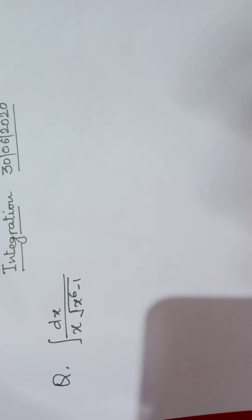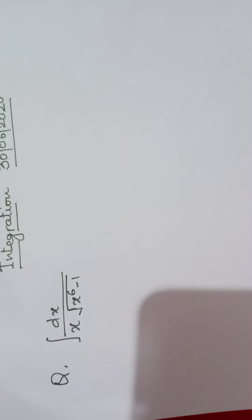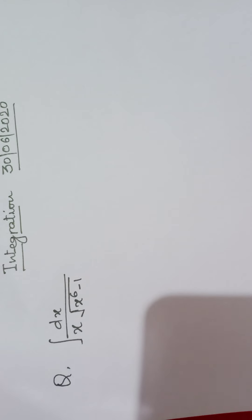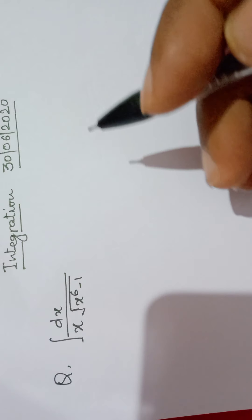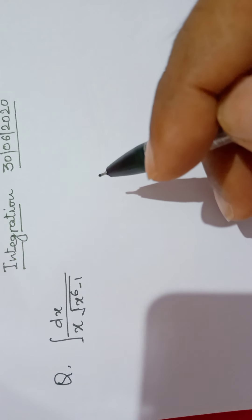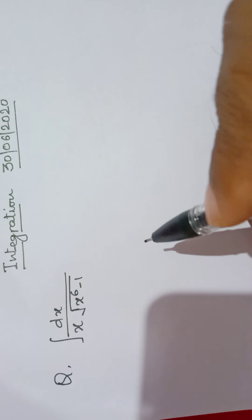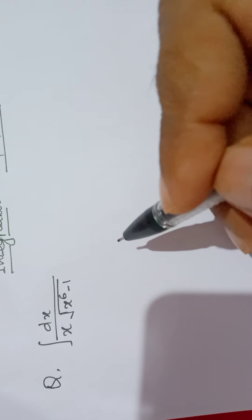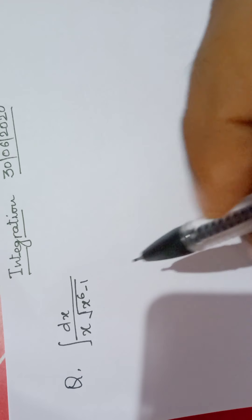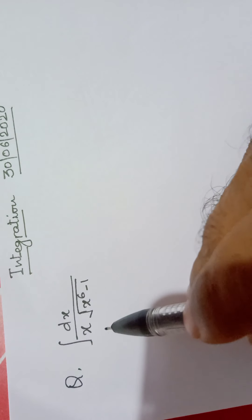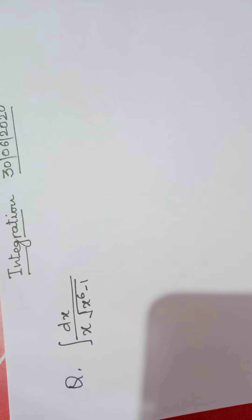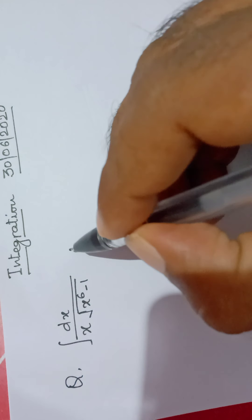Hello and good morning students. We are doing integration in which we are solving problems related to integration by methods of substitution. Today we see some more questions from substitution. The first question: integrate dx divided by x into under root of x to the power 6 minus 1. Apply substitution and put x to the power 3.